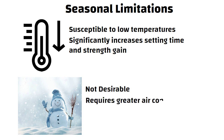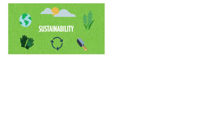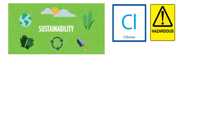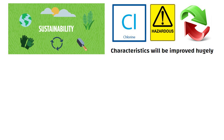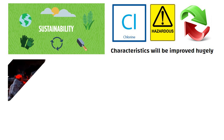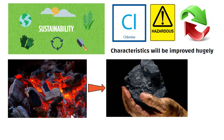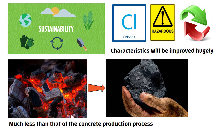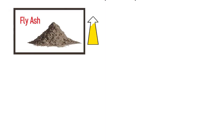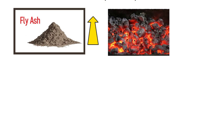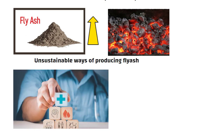Fly ash requires greater air content than conventional concrete. Sustainability: Ashcrete contains chlorine compound, which is hazardous, so if a replacement for chlorine is found, ashcrete characteristics will be improved hugely. Additionally, fly ash is produced through coal combustion, which releases carbon, but the amount is still much less than that of the concrete production process. Nonetheless, if the demand for fly ash increases, more coal must be combusted, resulting in unsustainable ways of producing fly ash. From a health point of view, fly ash is detrimental to human health when inhaled.